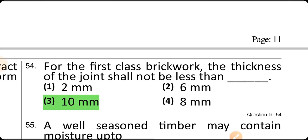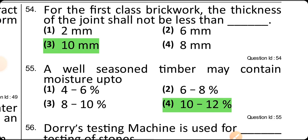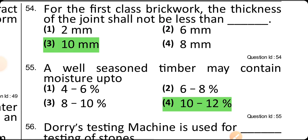For first class brickwork, the thickness of a joint shall not be less than 10 mm. Seasoned timber may contain a slope of moisture up to 10 to 12%. Seasoning means removal of water or moisture from timber to reduce weight and make it easy for transportation.